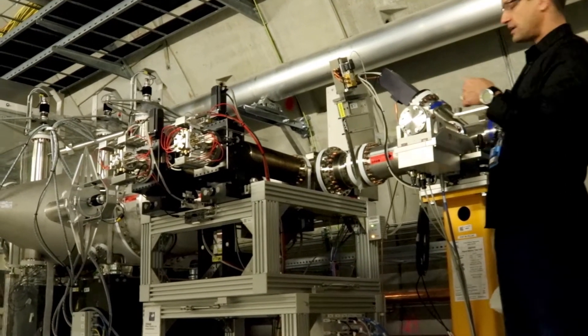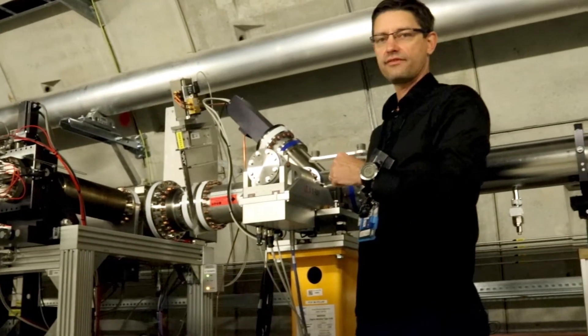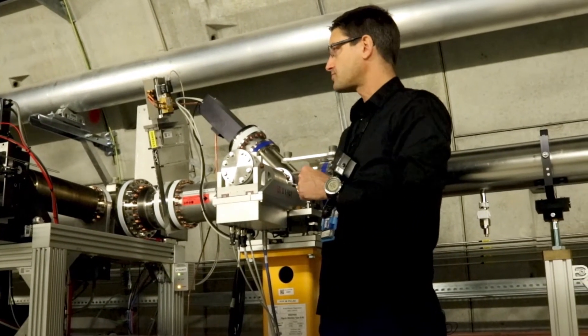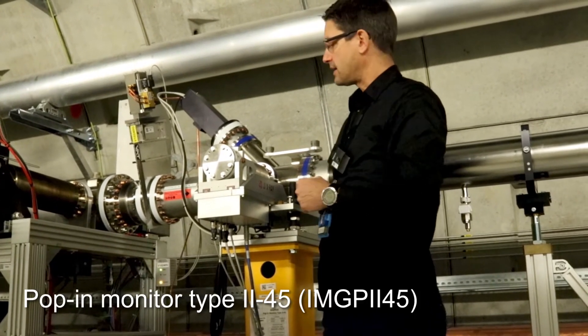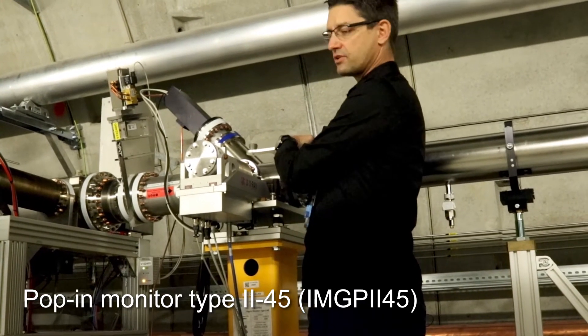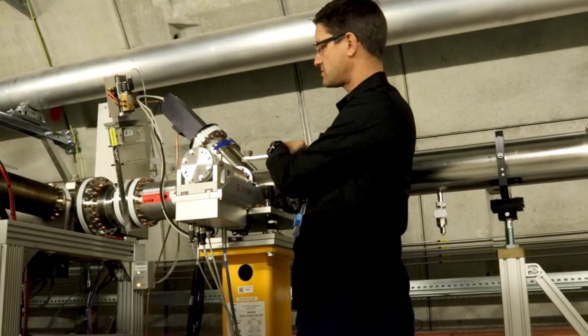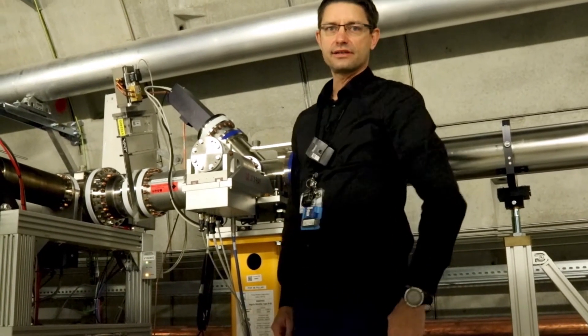After these we have here a regular imager, a more simple version which we have after every X-ray optics. This is called the pop-in monitor. We drive in from the side a scintillator which is under 45 degrees. There is no mirror, and the camera and optics looks at the scintillator at normal incidence.